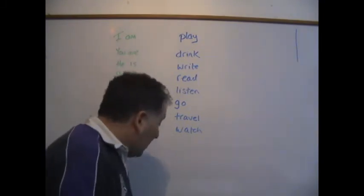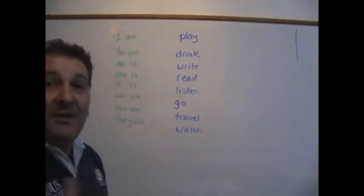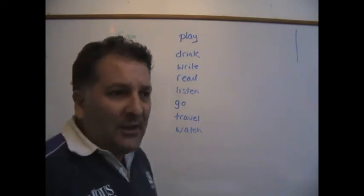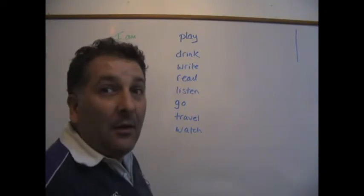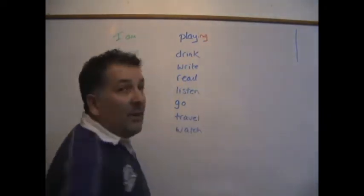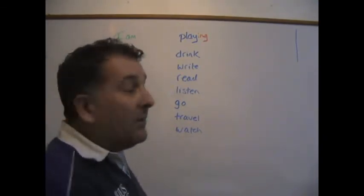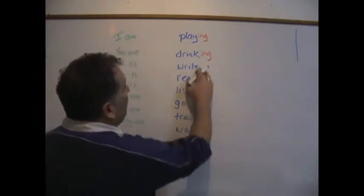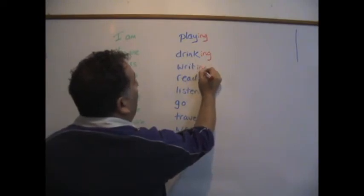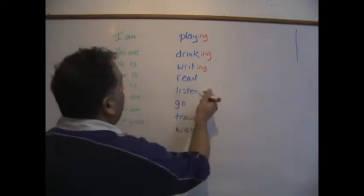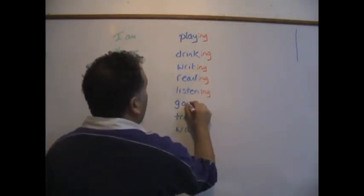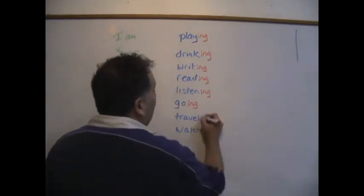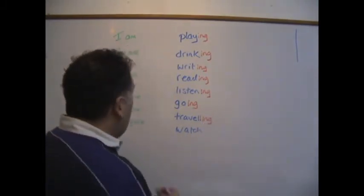Now I might use a gesture, like a confused face. I'll say to them: 'I am play — does this work? How can I change this?' And somebody says, 'It's I am playing.' So I am playing — we add the 'ing' to the verb. You are drinking. He is writing — we remove the 'e' and add 'ing' because the verb ends with 'e'. Read becomes reading, listen becomes listening, go becomes going. Travel — in UK standard English we double the 'l' and add 'ing'. And watch becomes watching.